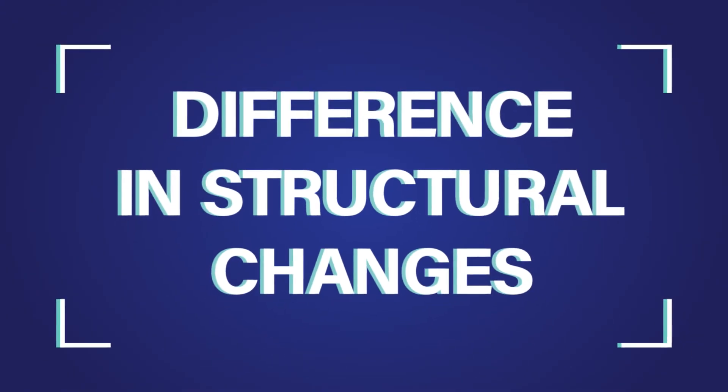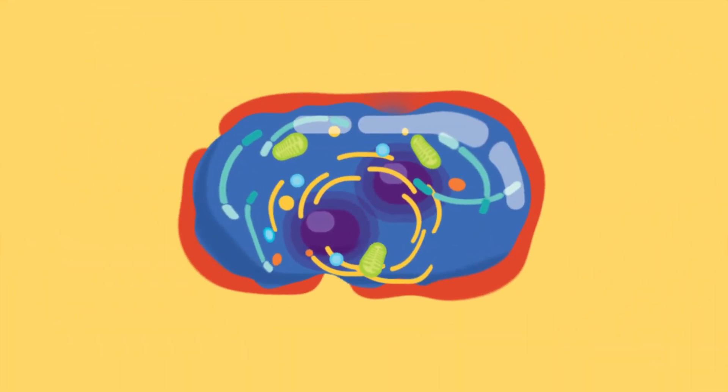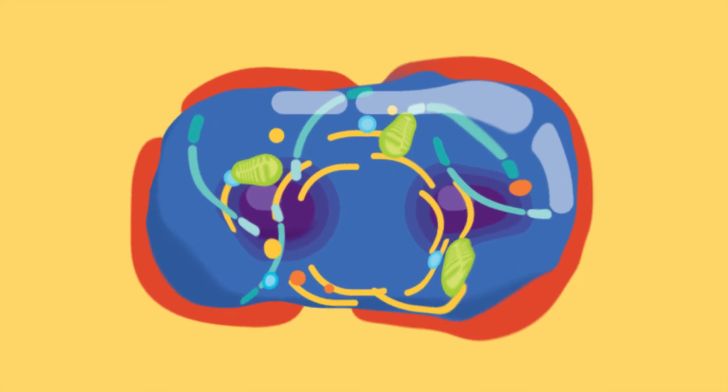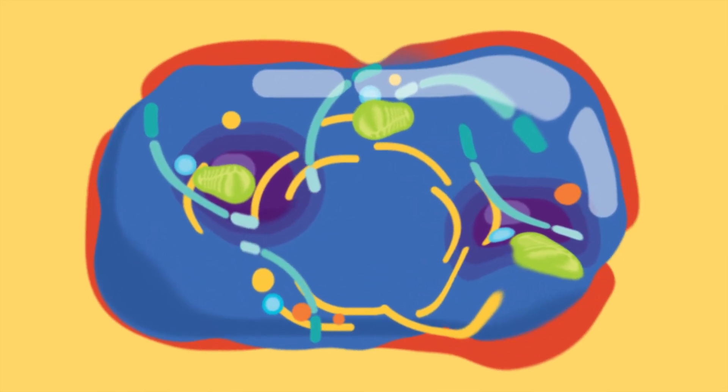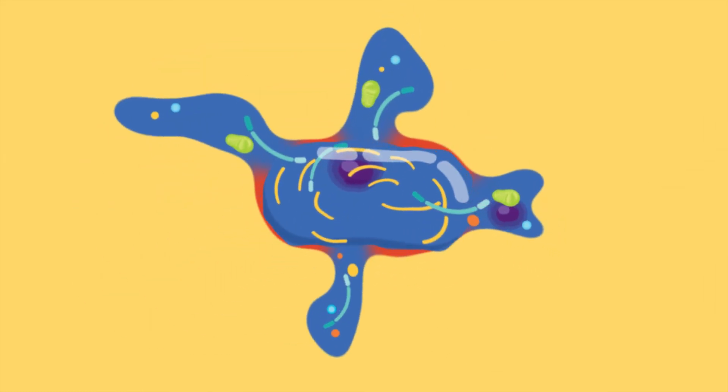Difference in structural changes. In necrosis, there is a loss of integrity of the wall of the cell, which leads to swelling of the cell's contents as well as disintegration of small bodies of the cell.